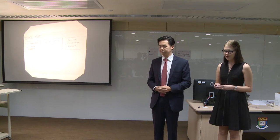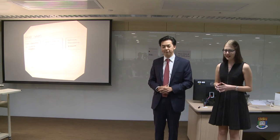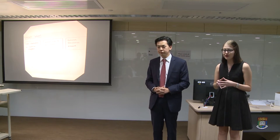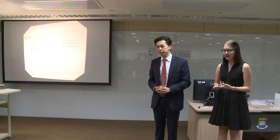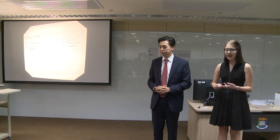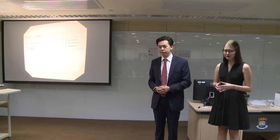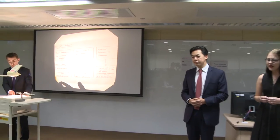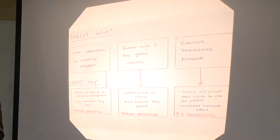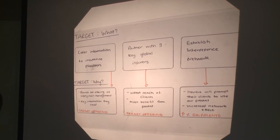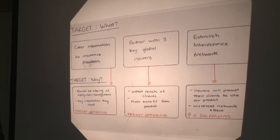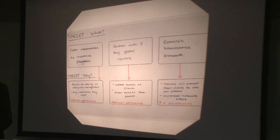The first arm of this strategy is Target, which seeks to fill the missing gap in your product offering — the insurance provider. This has three key steps: firstly, catering the information that you provide to what an insurance provider would want; secondly, partnering with three key global insurers; and finally, utilising an interdependence network. This arm of the strategy is key to meet the objective of how you target your offering to ensure you become a one-stop shop for supply chain management. In catering your information to insurance providers, you are able to fill the gap and become a one-stop shop, which meets the objective of targeting your offering.